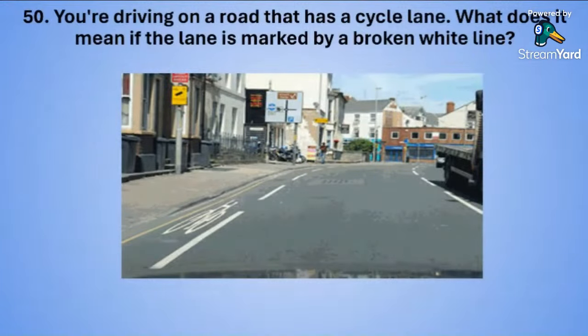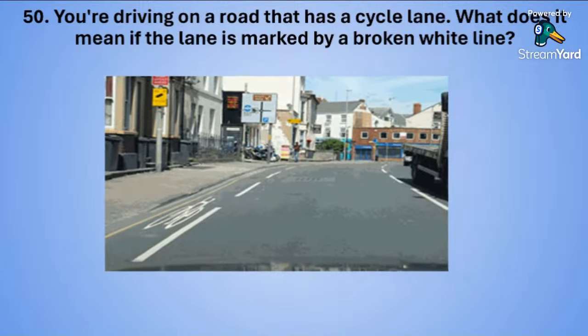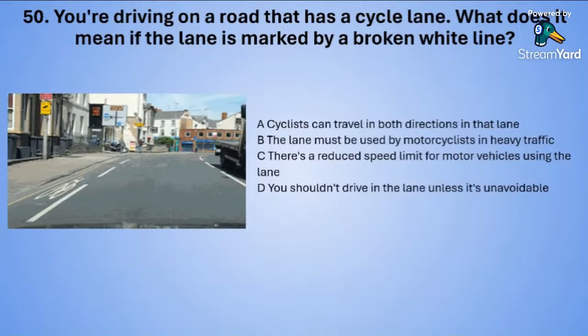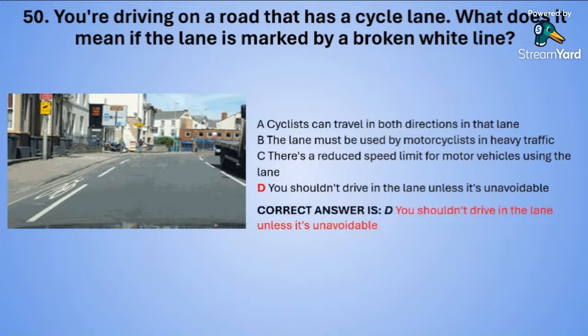Question fifty — the final question: You are driving on a road that has a cycle lane. What does it mean if the lane is marked by a broken white line? A: cyclists can travel in both directions in that lane. B: the lane must be used by motorcyclists in heavy traffic. C: there is a reduced speed limit for motor vehicles using the lane. Or D: you shouldn't drive in the lane unless it's unavoidable. The correct answer is D — you shouldn't drive in the lane unless it's unavoidable.